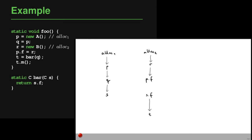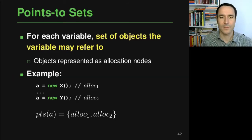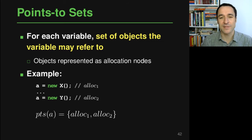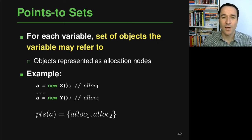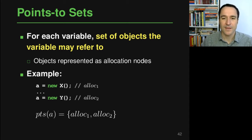Given this graph, we still don't know anything about the call t.m, because there is no connection in the graph from the allocation sites — where we know something about types — to the node representing t. This is what we need points-to analysis for. A points-to analysis computes points-to sets, which are sets of objects that a variable may refer to. Objects are represented as allocation nodes, so it's a static abstraction based on allocation sites.